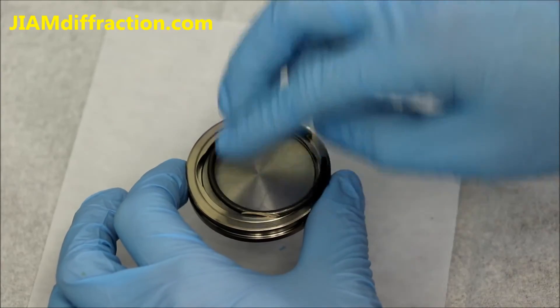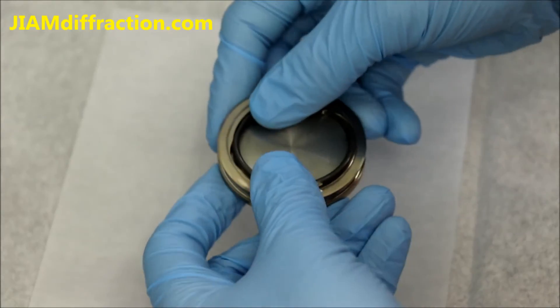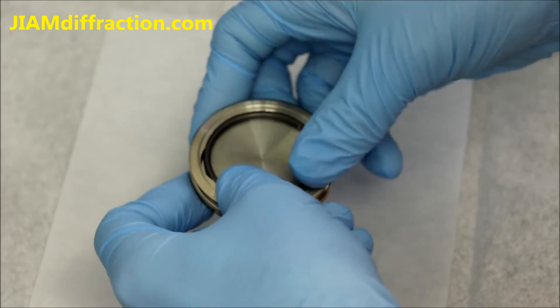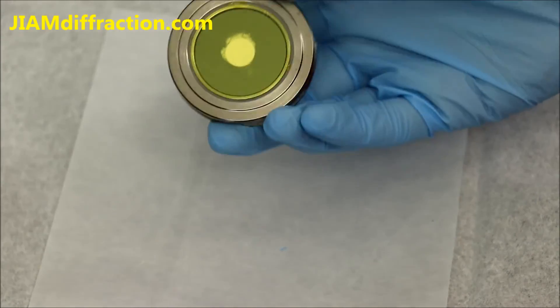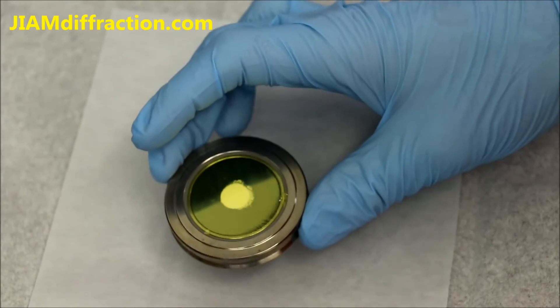We will insert the securing ring. And this can be a little tricky sometimes. Now it's easier than usual. Now we flip it back over and we have a sample ready to test.